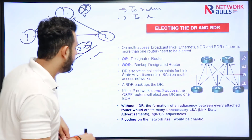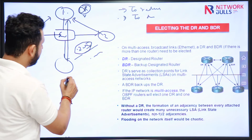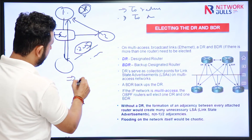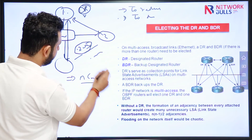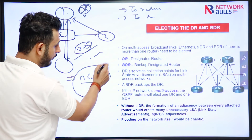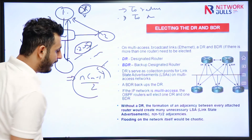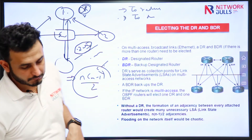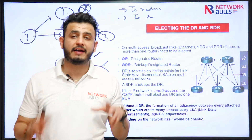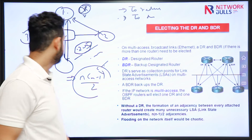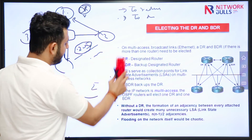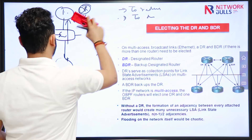By default, the number of adjacencies that exist on a multi-access segment is N×(N-1)/2, where N is the number of routers.